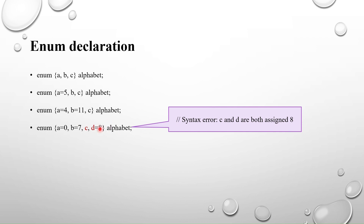You can also declare enums with a bit-width range, such as enum [1:0] {a, b, c}. Here you must mention the data type — bit or logic. With a 2-bit range, you can represent up to four elements (values 0 to 3), so three elements a, b, c with values 0, 1, 2 are valid.